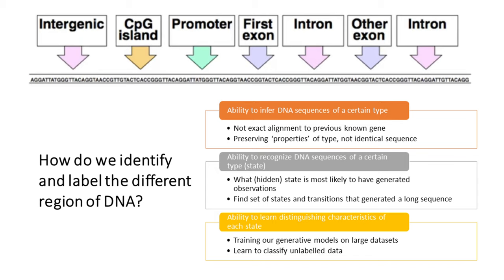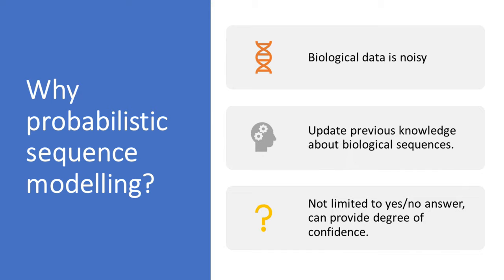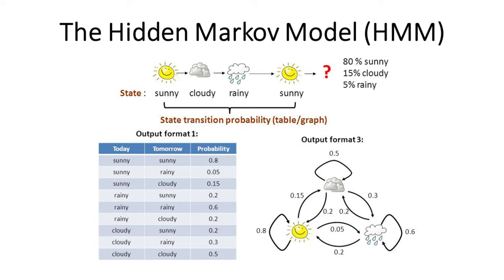The generative model must be able to infer the functionality of non-identical sequences and recognize the patterns of known sequences. Once the model is developed, we can classify non-annotated sequences based on the annotated regions. These generative models are often built using probabilistic modeling. Why is it useful to have a probabilistic model for biological sequences? First, biological data is often noisy — data collected from different sources may give rise to variations due to biological variability.